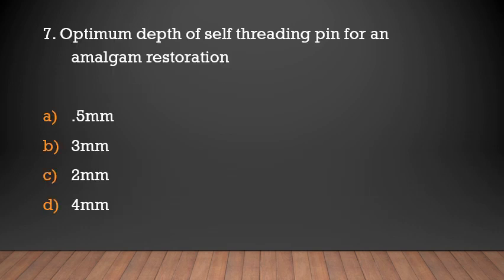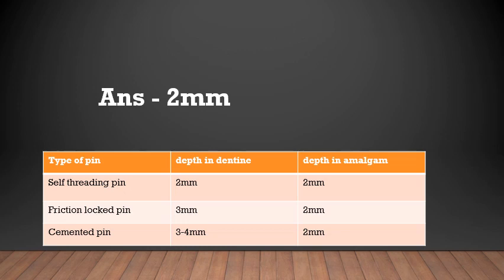Optimum depth of a self-threading pin for an amalgam restoration: 0.5 mm, 3 mm, 2 mm, or 4 mm? The answer is 2 mm. In self-threading pins, depth in dentine and depth in amalgam are both 2 mm. For friction-locked pins, depth in dentine and amalgam is also 2 mm. For cemented pins, depth in dentine is 3–4 mm and depth in amalgam is 2 mm.